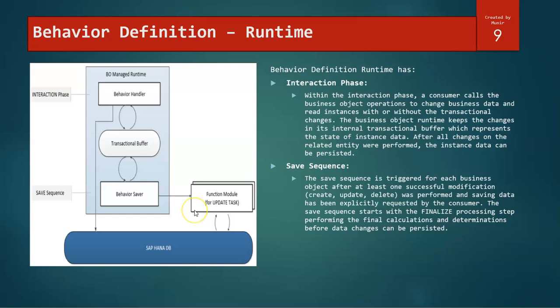We have to explicitly write the save sequence method. There are five methods: finalize, check before save, save, and clean up methods. That has to be done with the adjust numbering and stuff like that. We will look into that save sequence in our upcoming sessions.